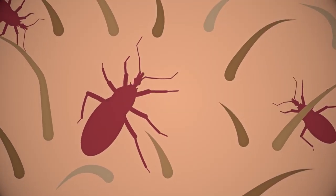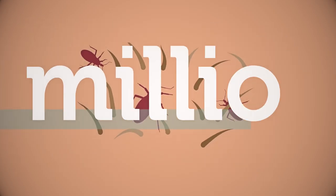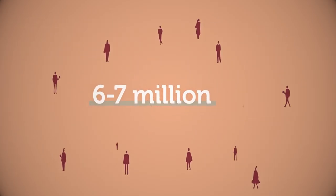Chagas disease is a neglected tropical disease that silently kills thousands each year. There are about 7 million people living with the parasite.